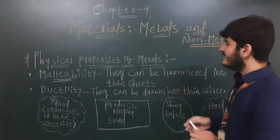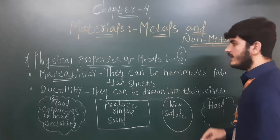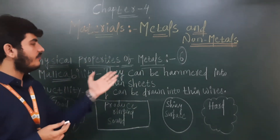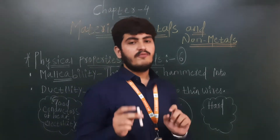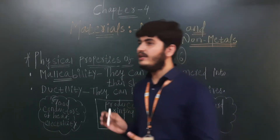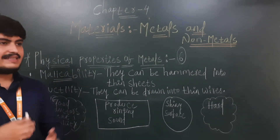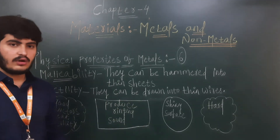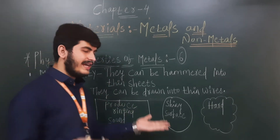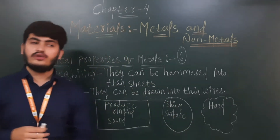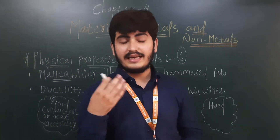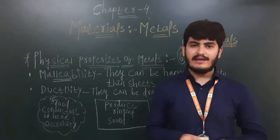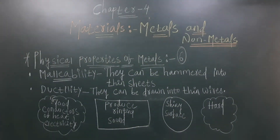So these are the six physical properties of metals. I hope you understood them. In the next video we will learn about the physical properties of non-metals — non-metals will not change into thin sheets, will not form thin wires, are not good conductors, will not produce a ringing sound, and do not have a shiny surface. We will discuss this in the next video. If you have any doubts, you can ask in the online session. Thank you and have a nice day.